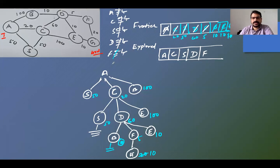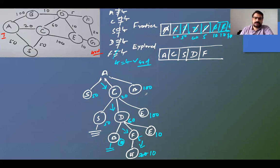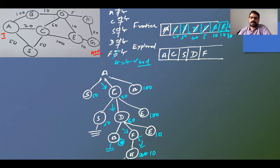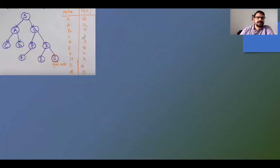G is a goal node, so we have found the solution. The path is: A → C → D → F → G. This path is determined by the heuristic values. Note that this path may not be the optimal path, but we do reach the goal. This is best first search — we use heuristic values instead of calculating the actual path cost.